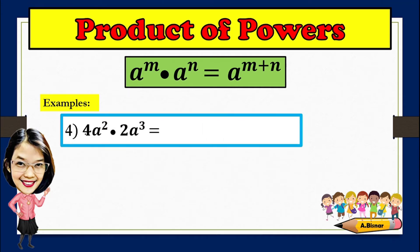For number 4, 4a squared times 2a cubed. As you observe, there are already numerical coefficients, which are 4 and 2, and therefore we're going to multiply them. 4 times 2 is 8. Then let's copy the given variable, which is a, and add its exponents. 2 plus 3 will give 5. So the answer is 8a to the fifth power.